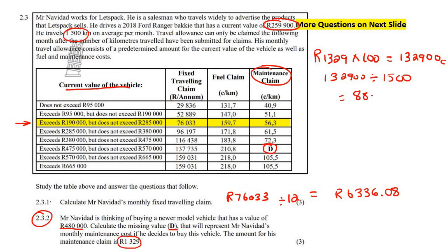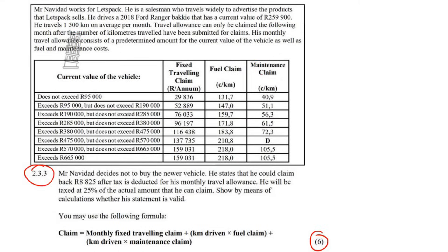That gives us 88.6, so D = 88.6. Now remember there are more questions — we've got a six-mark question here. It says: Mr. Navidad decides not to buy the newer vehicle. He states that he could claim back 8,825 after tax is deducted for his monthly travel allowance. He will be taxed at 25% of the actual amount that he can claim. Show by means of calculations whether his statement is valid.